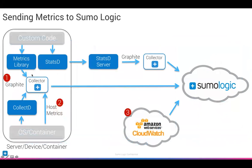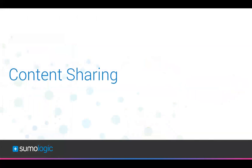Here's a simple diagram: if you already have an installed collector on your host — which has custom code, OS, containers — you can set up a collector to pull in host metrics to Sumo. For Graphite-compatible metrics via a metrics library or collectd, those go straight into the collector and on to Sumo. StatsD is slightly different — it requires a StatsD server which does aggregation and filtering before passing to the collector. For CloudWatch, we use a cloud-to-cloud collector to grab those metrics and send them to Sumo Logic.